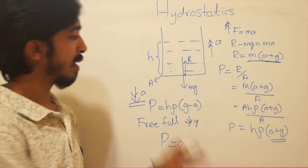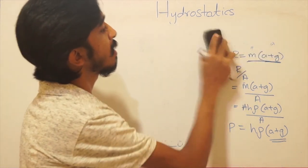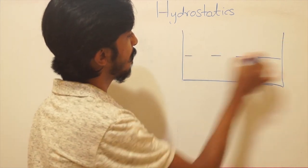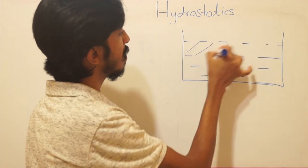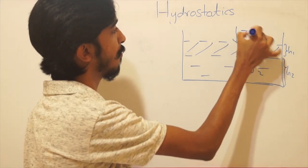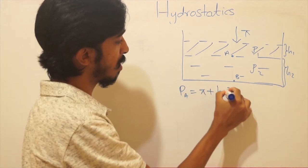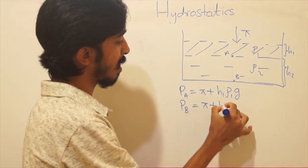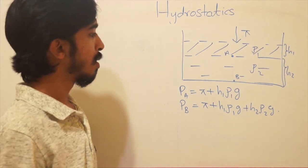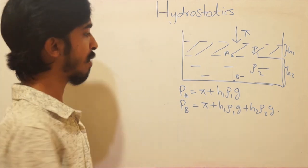The next concept: when we have two layers of different liquids in a container — the same principle applies for more than two layers. Say we have a large container with water at the bottom (height h2, density ρ2) and coconut oil on top (height h1, density ρ1) with atmospheric pressure P_atm. The pressure at point A in the oil layer is P_atm + h1ρ1g, and the pressure at point B at the bottom of the water layer is P_atm + h1ρ1g + h2ρ2g.